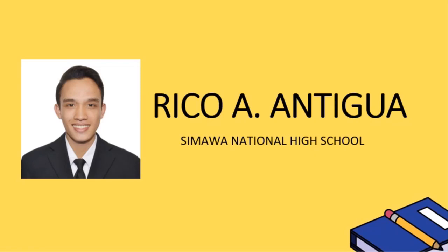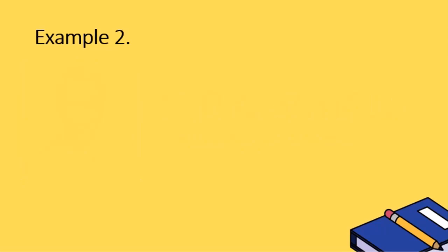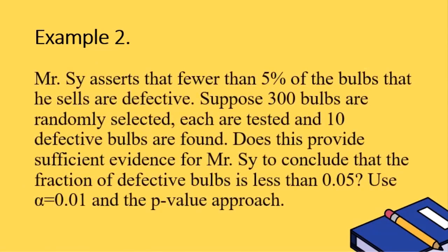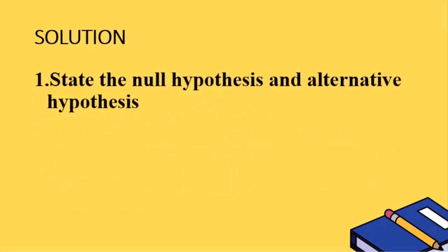My name is Rico A. Antigua, a teacher from Simawa National High School. Example 2: Mr. C asserts that fewer than 5% of the bulbs he sells are defective. Suppose 300 bulbs are randomly selected, each tested, and 10 defective bulbs are found. Does this provide sufficient evidence for Mr. C to conclude that the fraction of defective bulbs is less than 0.05? Use alpha equals 0.01 and the p-value approach. Step 1: The null hypothesis is p equals 0.05, meaning the fraction of defective bulbs is equal to 0.05. The alternative hypothesis is p is less than 0.05.